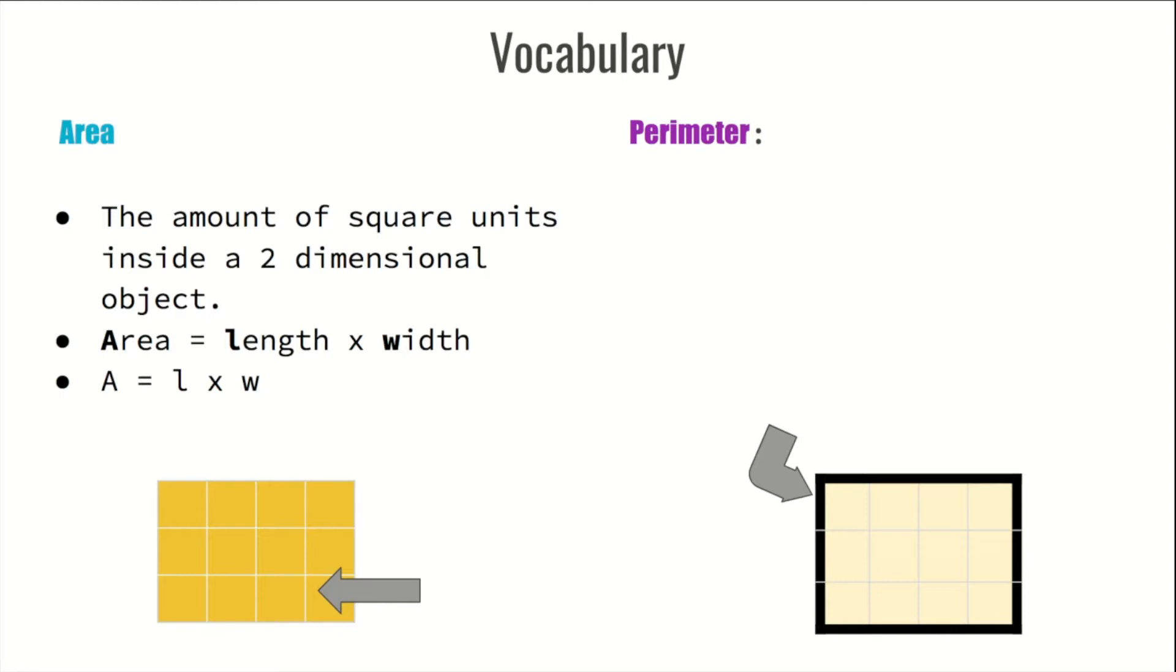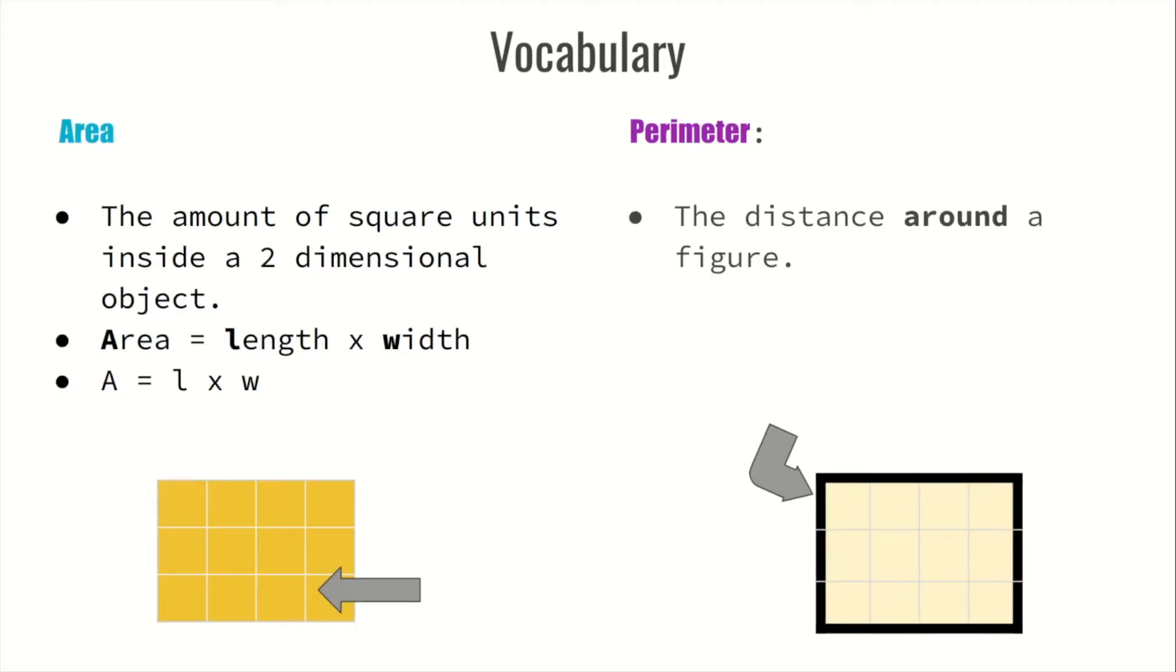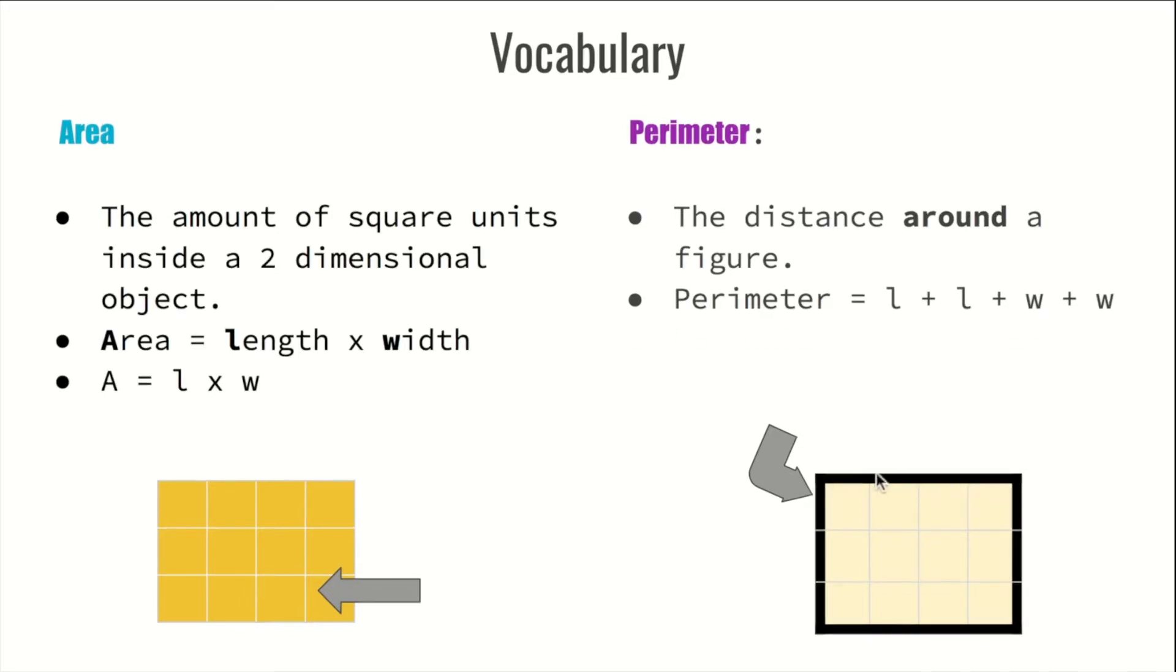A for area, L for length, W for width. On the other hand, perimeter. Perimeter is a distance around a figure. Perimeter's formula is length plus length plus width plus width. Let's say you were saying that this is the length,